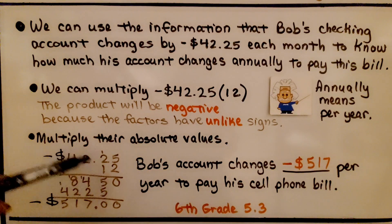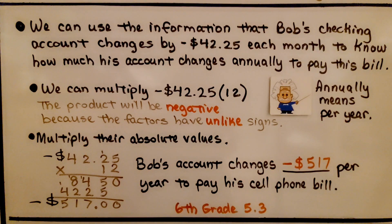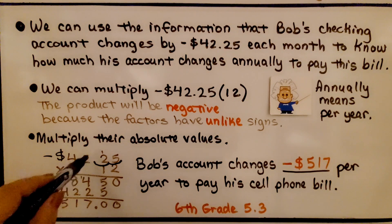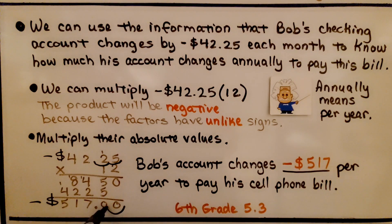If you don't remember how to multiply with decimals, I'm going to have a link to 6th Grade Math 5.3. Just remember, if there are 1, 2 decimal hops in the problem, there's going to be 1, 2 decimal hops in the product.